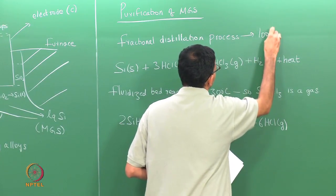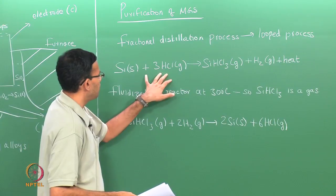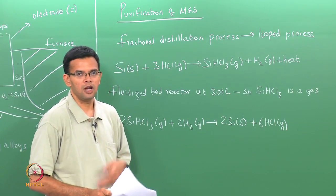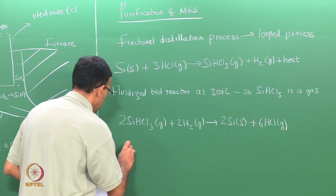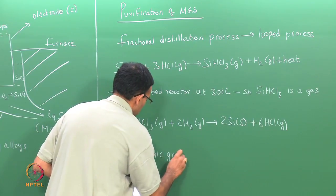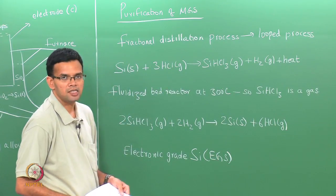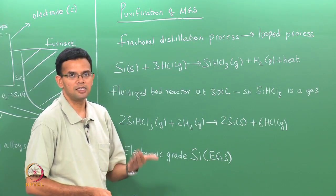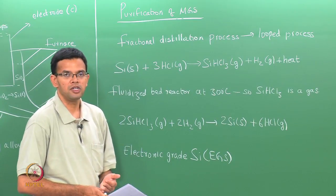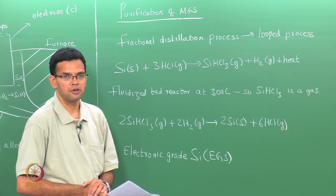This gas is separated by fractional distillation and then reduced using hydrogen: SiHCl3 (gas) + H2 → Si (solid) + HCl (gas). This process can be repeated in a loop to increase the purity of the silicon obtained. The silicon solid obtained can further react with HCl to give SiHCl3, which is further distilled, and so on, to reduce the amount of impurities. The silicon obtained this way is called electronic grade silicon (EGS), with impurity levels of the order of parts per billion.